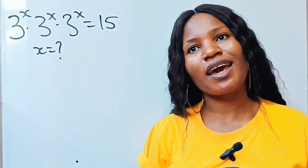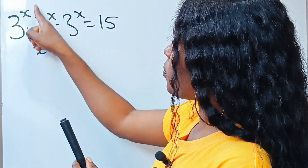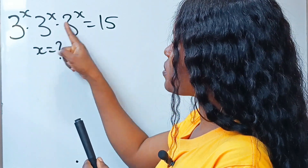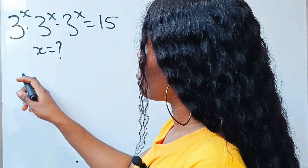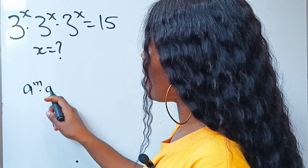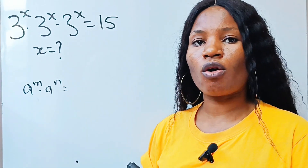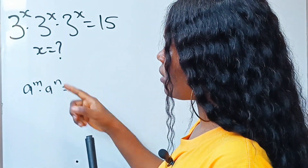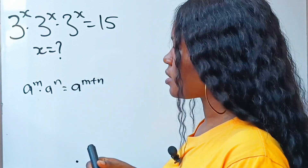Welcome to my channel once again. Let's get to the point. So we have 3 to the power of x, multiplied by 3 to the power of x, multiplied by 3 to the power of x, is equal to 15. This simply means when you have a to the power of m multiplied by a to the power of n, according to the law of indices or exponents, you pick one base and add the powers.